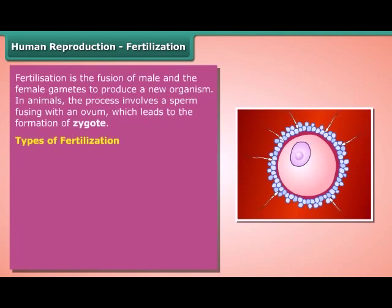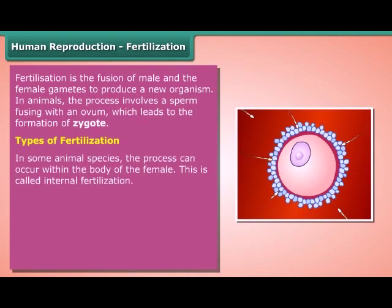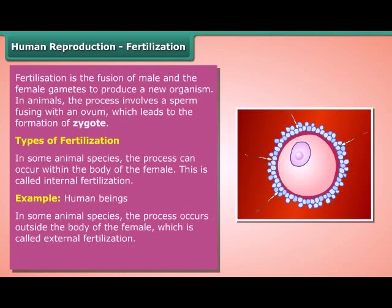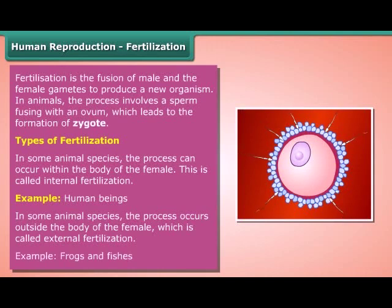Types of fertilization. In some animal species, the process can occur within the body of the female — this is called internal fertilization. Example: human beings. In some animal species, the process occurs outside the body of the female, which is called external fertilization. Example: frogs and fishes.